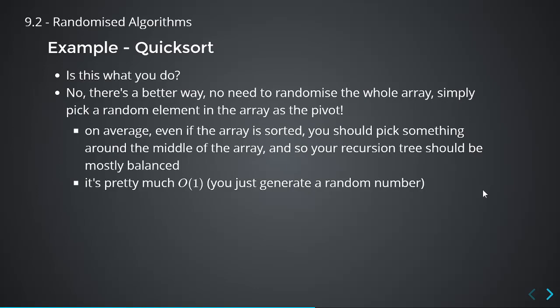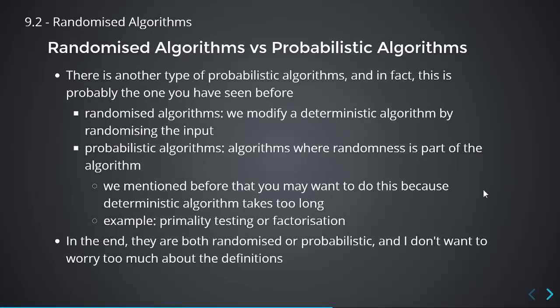That's pretty much it for randomized algorithms — you have a deterministic algorithm and you inject some sort of randomness into it. Now I want to talk about probabilistic algorithms, which you've probably heard of if you've done crypto or security — things like prime numbers, factorization, discrete log. With randomized algorithms, I think about a deterministic algorithm like quicksort or FindMax, and we randomize the input or add some randomness to it. Whereas with probabilistic algorithms, the randomness is part of the algorithm itself.